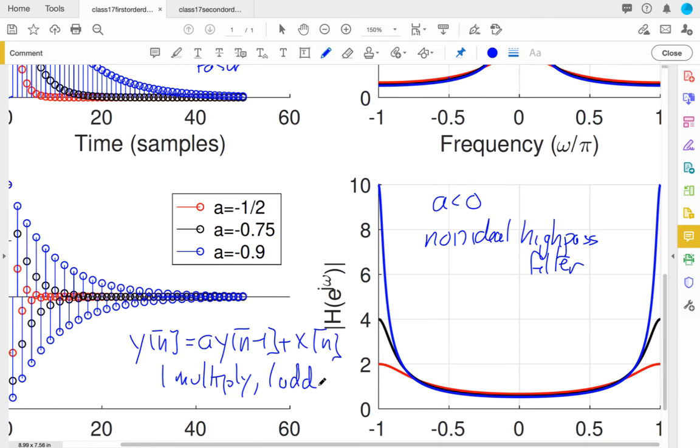That would be 14 multiply-adds, depending on how I implemented the filter. Or at least 14 adds, followed by one multiply, if I were clever about it. But either one is going to be more work than this. So if this filter is good enough, part of engineering is looking and saying, if this filter is good enough, I don't need that fancy filter.